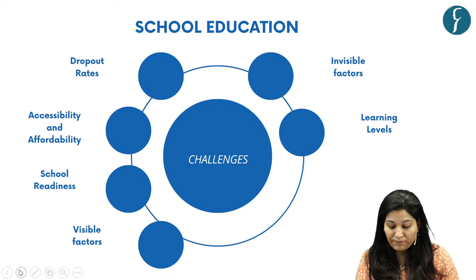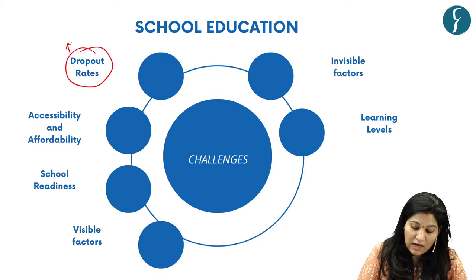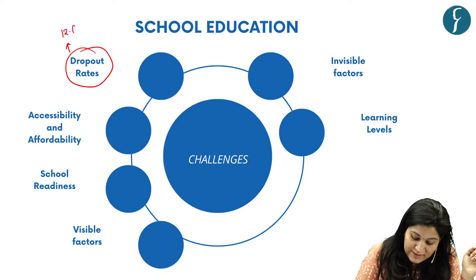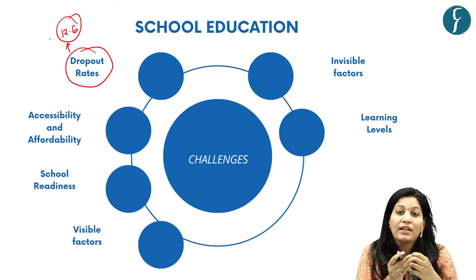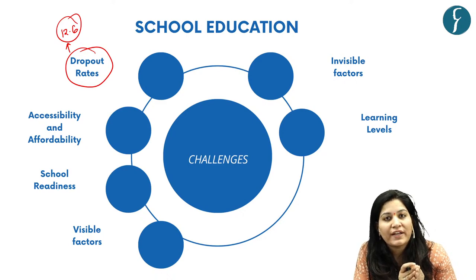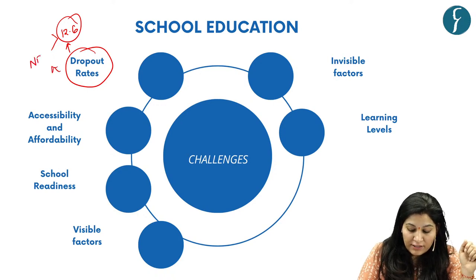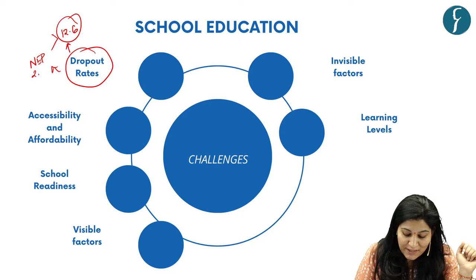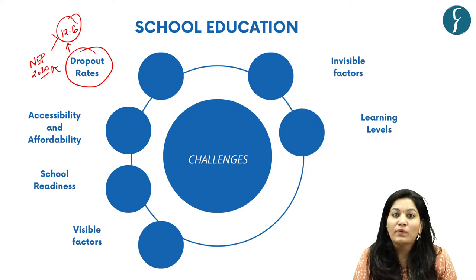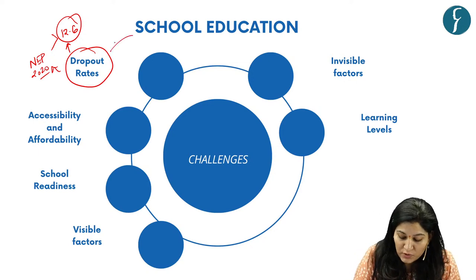The first challenge associated with school education is dropout rates. According to national estimates, the national average dropout rate in India is 12.6%. States like Gujarat, Karnataka and Bihar have dropout rates higher than the national average. This is problematic because the National Education Policy 2020 aims to achieve 100% GER by year 2030.